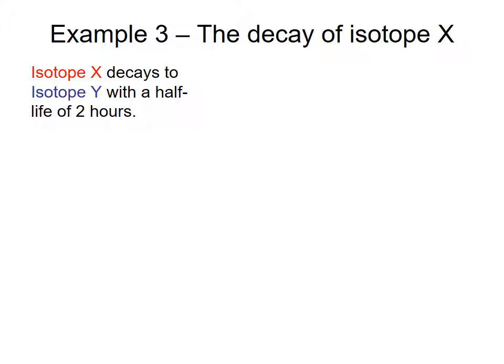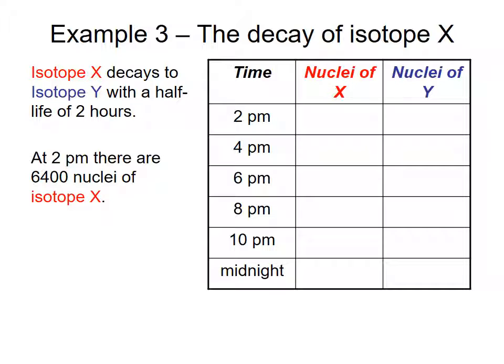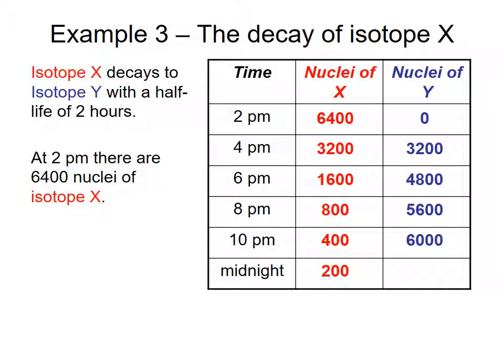Double 3 decay, this time of isotope X. So isotope X decays to isotope Y with a half-life of two hours. At 2 p.m., there is 6,400 nuclei of isotope X and nothing in nuclei Y. At 4 p.m., there's now 3,200 of nuclei X and 3,200 of nuclei Y. 6 p.m., 1,600 of nuclei X and now 4,800 of nuclei Y because it's going to be adding to that 3,200. 8 p.m., 800 of X, 5,600 of Y. 10 p.m., 400 of X and 6,000 of nuclei Y. At midnight, 200 of X and nuclei Y, 6,200.